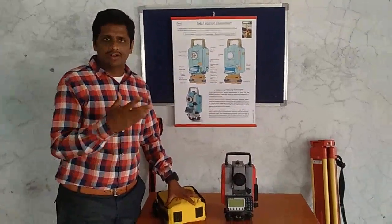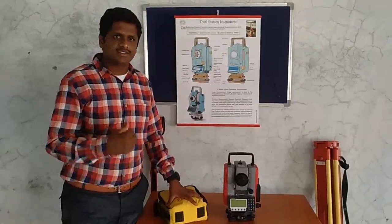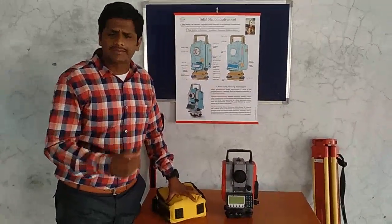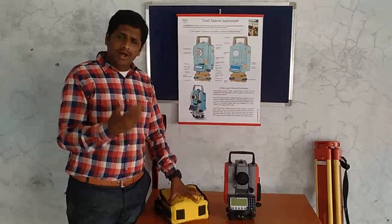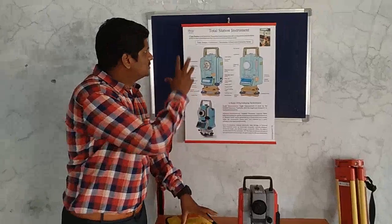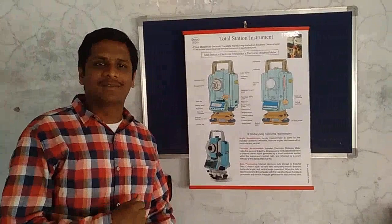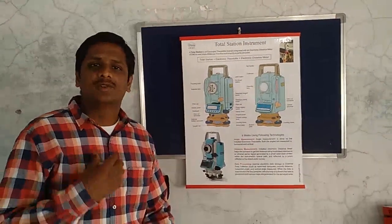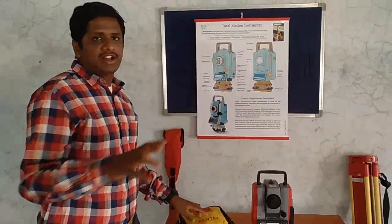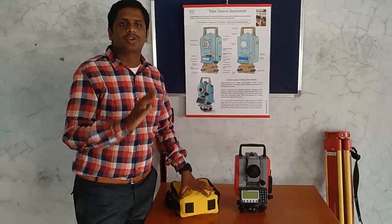We have different instruments to calculate the angles — we have theodolite. We also use tapes to calculate distances. But without tape, without any other instrument, we can directly use total station — a single instrument — to calculate both distances and angles. Now I am going to explain about each and every part of total station.